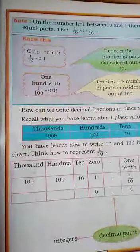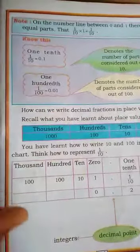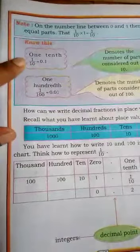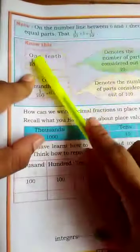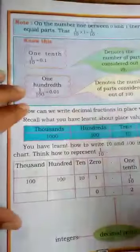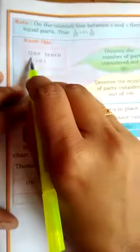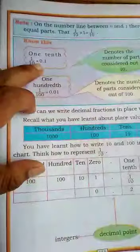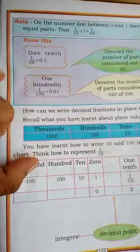Good morning students. In this video we continue decimals page number 155. Here, 1 tenth, 1 by 10 can be read as 1 tenth which is equal to 0.1.